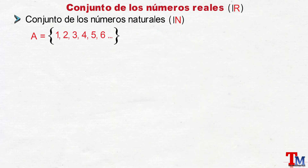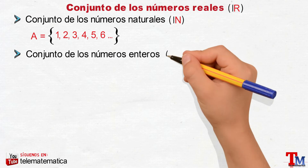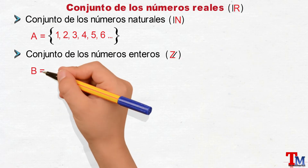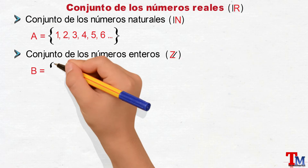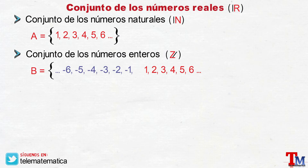El primer conjunto numérico que surgió y que la humanidad utilizó para contar son los números naturales. En segundo lugar tenemos el conjunto de los números enteros, que se identifica con la letra Z mayúscula, y está formado por el conjunto de los números naturales, los opuestos de los números naturales y el número cero.